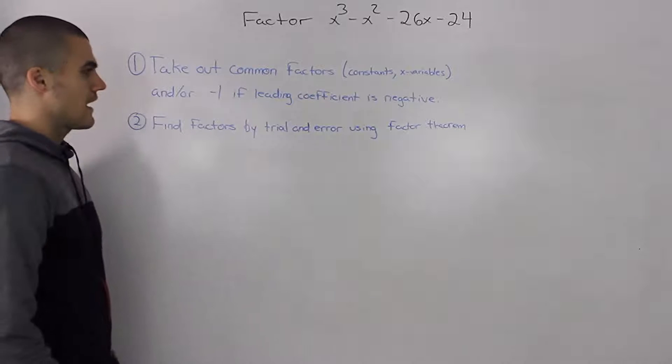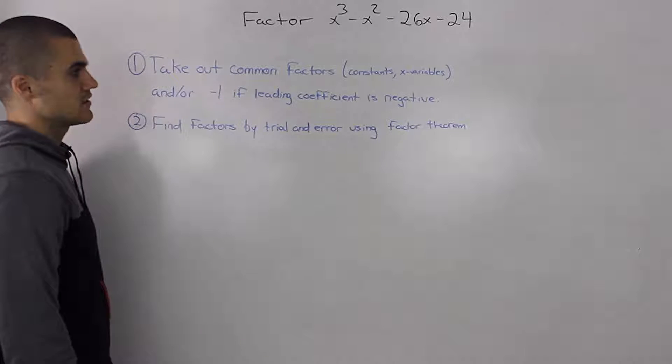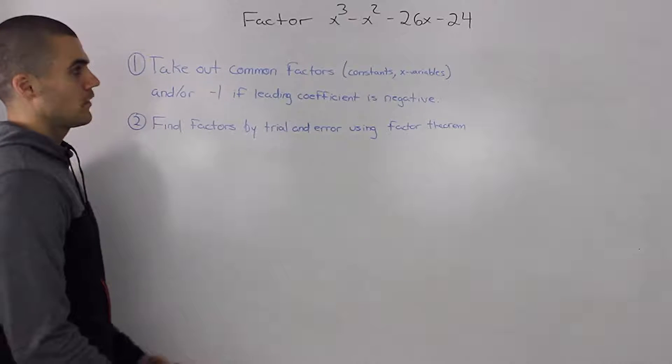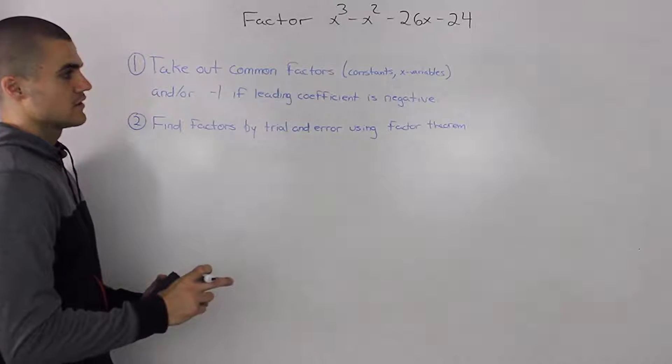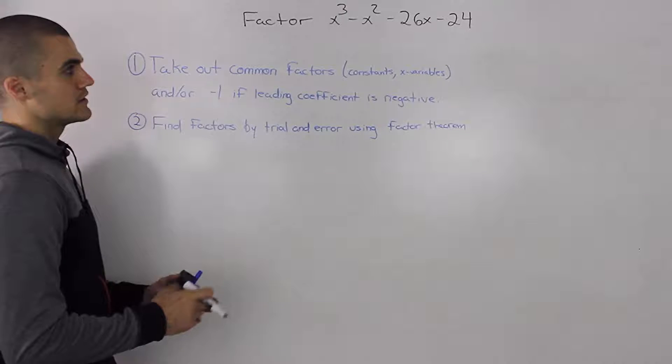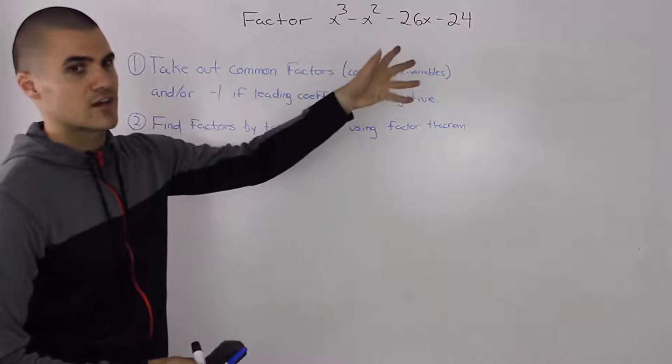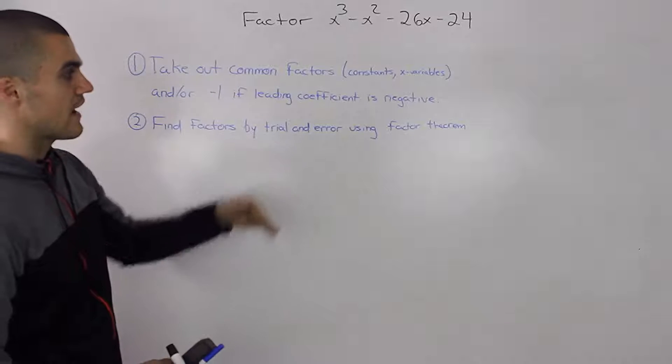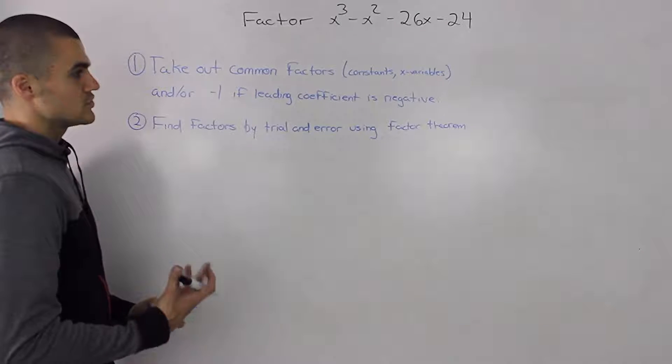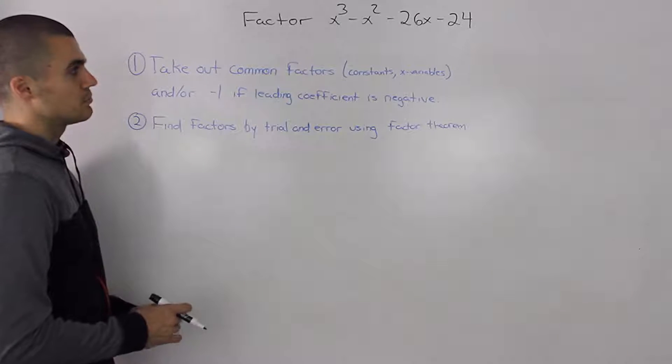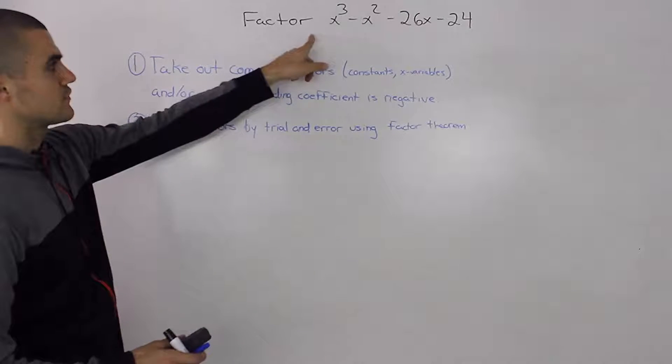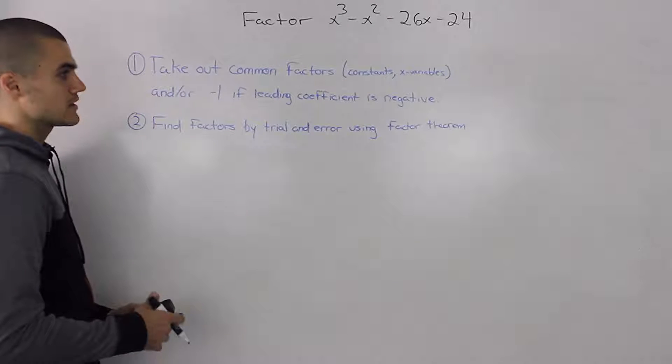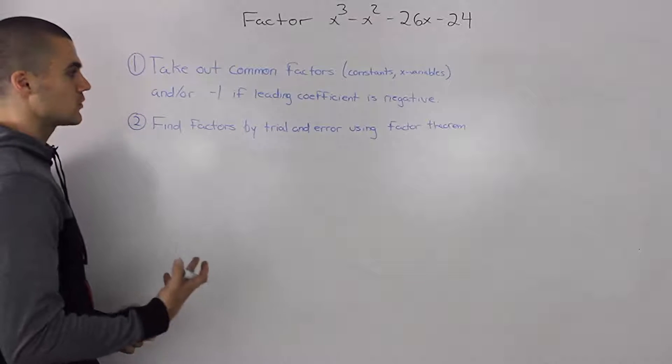Step two: find factors by trial and error using the factor theorem. What does the factor theorem state? Well if we divide the dividend by a divisor and get a remainder of zero, that means that that divisor is going to be a factor. So what we have to do is start plugging in numbers for x into the dividend and trying to find when it's going to equal zero.